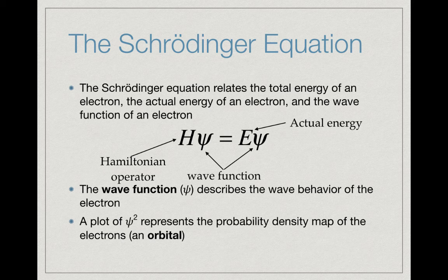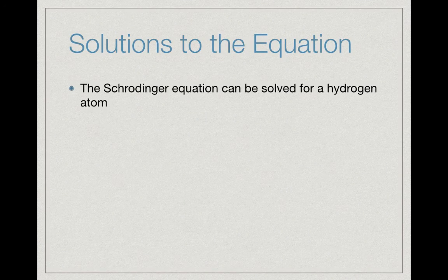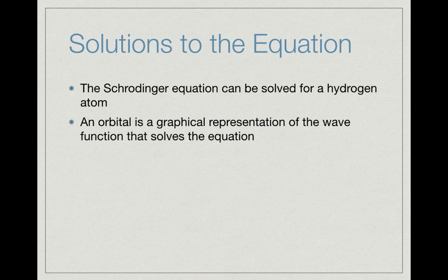That's what we call an orbital. So if we plot psi squared, we get where we are most likely to find the electron around an atom. Solutions to the equation can be found for a hydrogen atom or any other atom that only has one electron—so if you're looking at ions, sometimes that can be done as well. The orbital is really a graphical representation of the wave function psi that solves the Schrödinger equation.